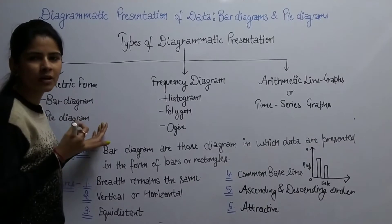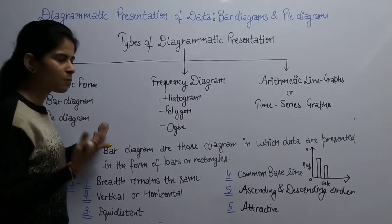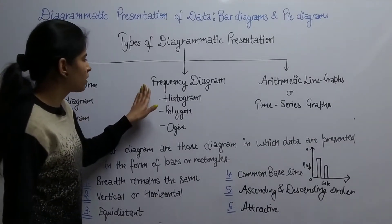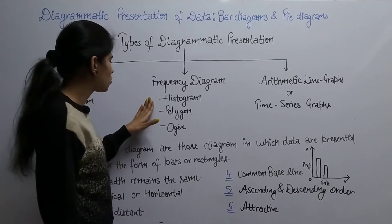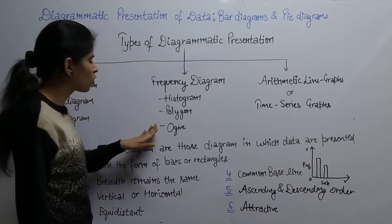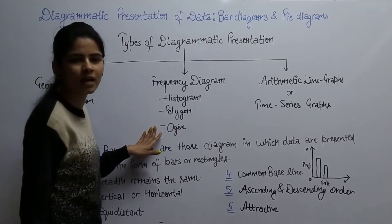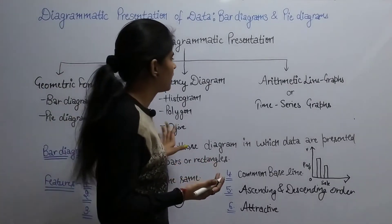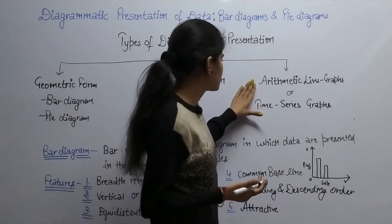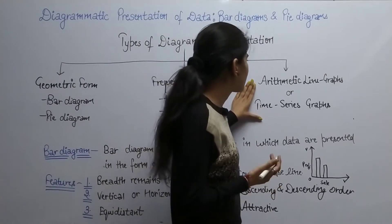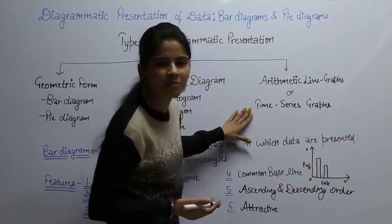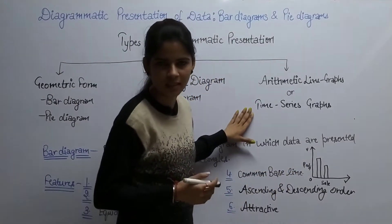Second, we represent our frequency diagram — in the form of histogram, polygons, and ogive. Next and last, we have our arithmetic line graphs, which we also call time series graphs.